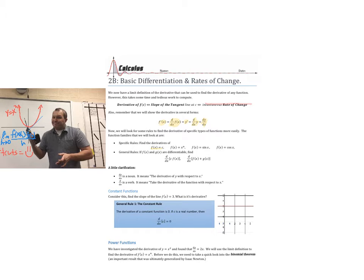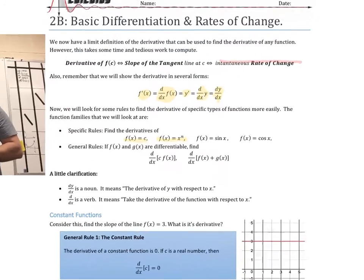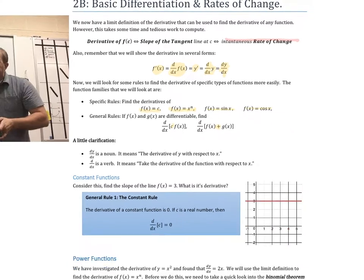We have some specific rules to explore: the constant rule, what happens with x to some power, the derivative of sine, and the derivative of cosine. Then we have general rules — what if a function is multiplied by a constant, or what if we have two functions being added, a sum of functions.